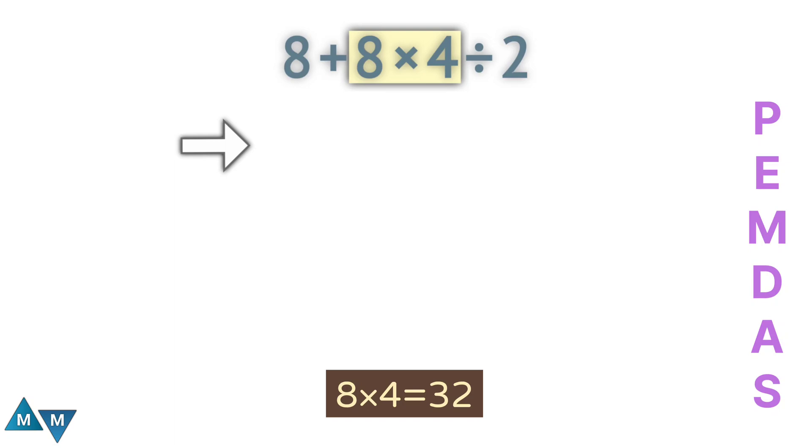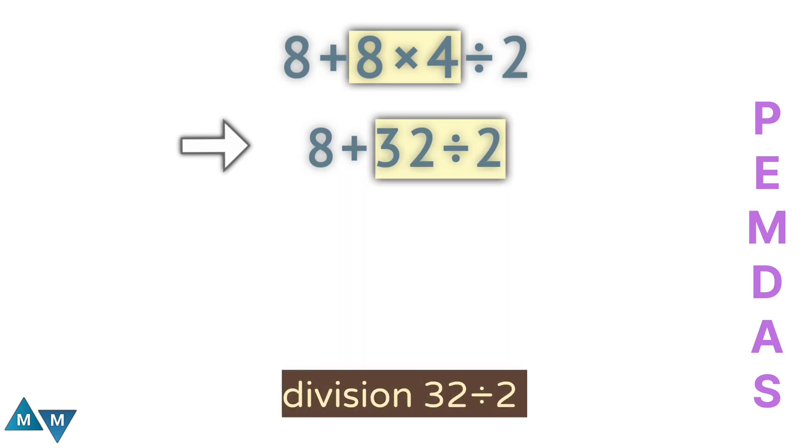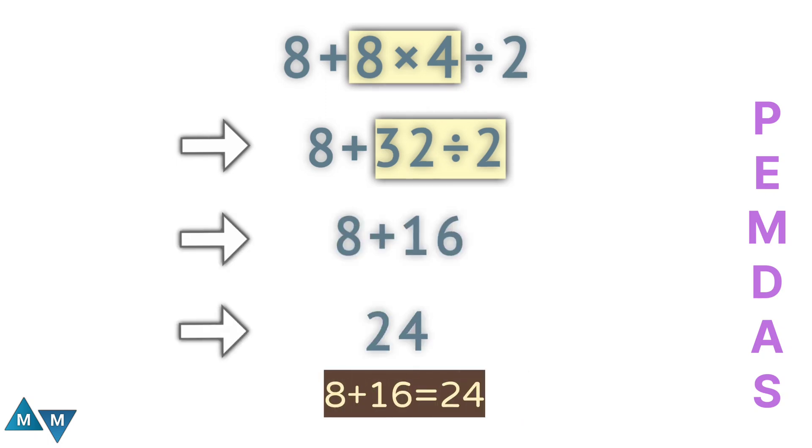Now we have the following expression. Now our next move will be division: 32 divided by 2, which equals 16. Now the expression becomes 8 plus 16, which equals 24.